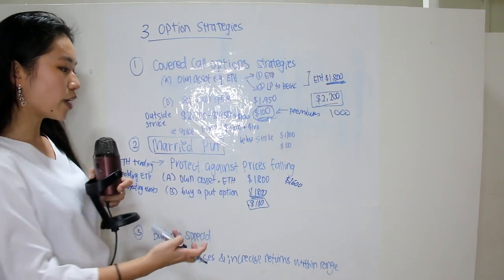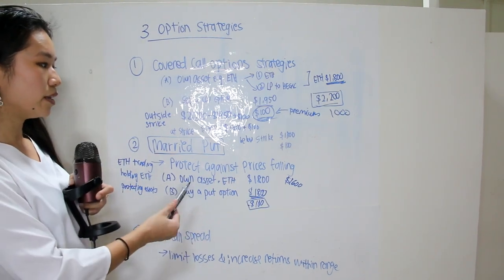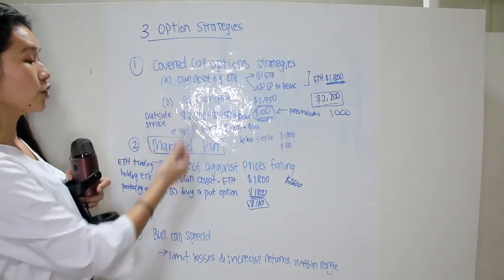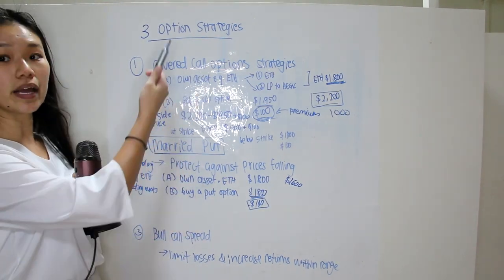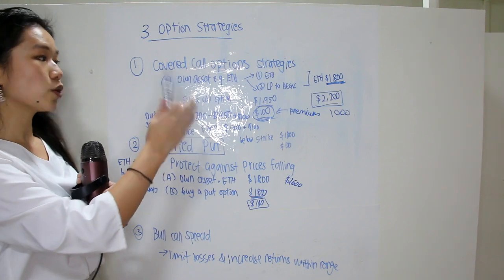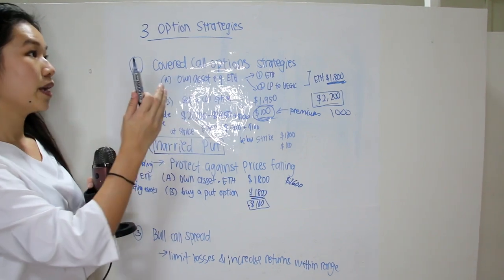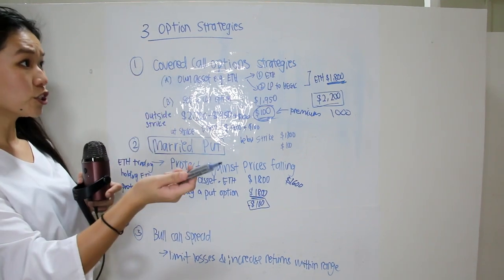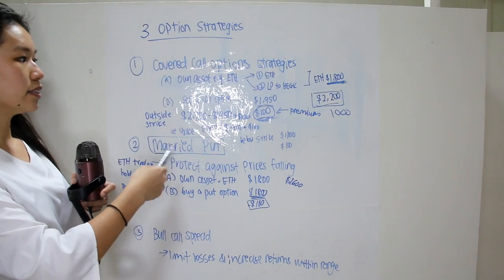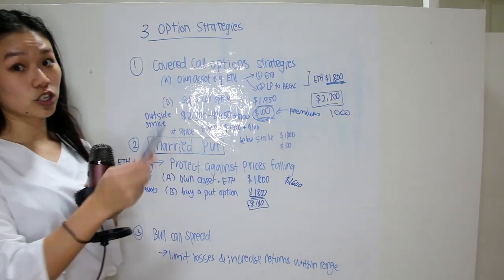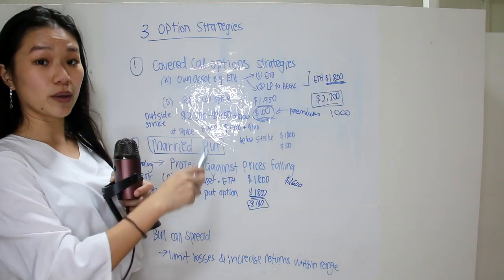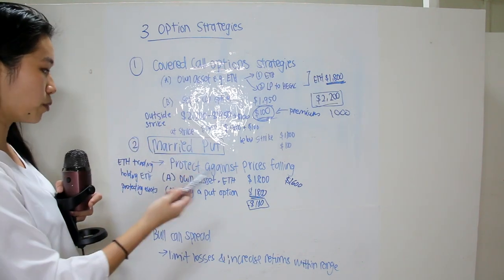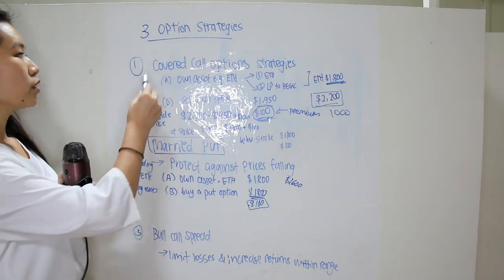You can buy married puts on Hedric, Opium, Potion, and also on OQYN. So we've covered two simple strategies now.